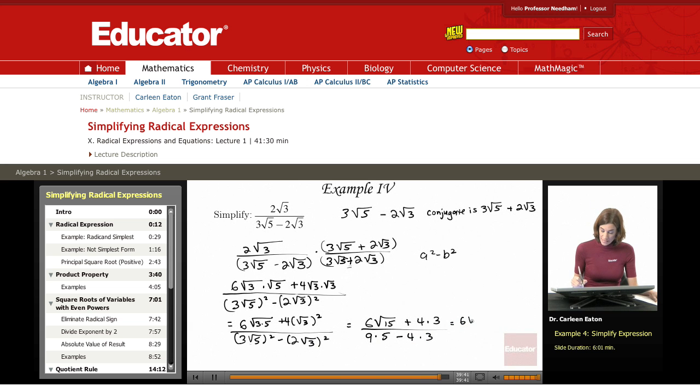Continuing to simplify, now we've done the hard part. This is 6√15 plus 12 divided by 45 minus 12. Almost there. 6√15 plus 12 divided by 45 minus 12, which gives you 33.